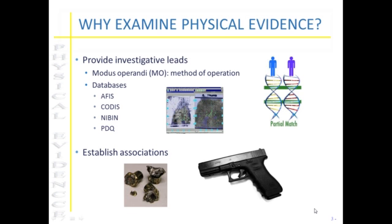Physical evidence can also help establish associations — usually trying to link victims to suspects, victims back to a particular crime scene, or suspects back to particular objects. Something as simple as showing that a bullet came from a certain weapon used in the commission of a murder, hair transferred from a victim to a suspect, or paint left at a hit and run — all of these help provide associations in an investigation.